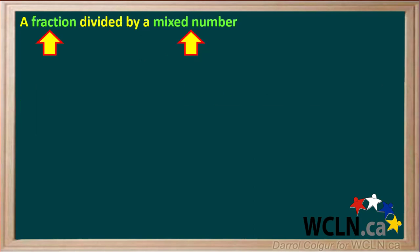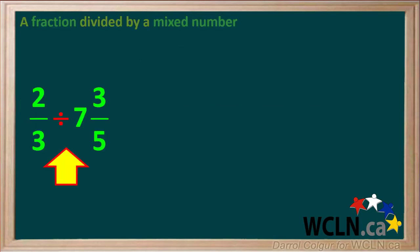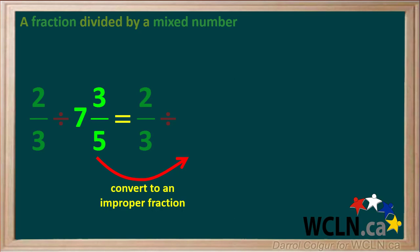Let's do a fraction divided by a mixed number — this is a good one for you to try. The problem is 2 thirds divided by 7 and 3 fifths. Pause the video, come up with an answer, then resume the video and check your answer. We'll start by converting the mixed number 7 and 3 fifths to an improper fraction, which comes out to 38 over 5.